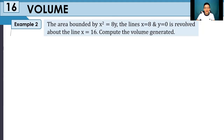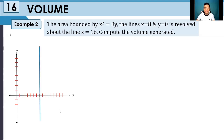Let us first graph our simple lines. Here we have our x and y axis. We have x is equivalent to 8 — that is our vertical line. For y is equivalent to 0, that is our x-axis. Next is our axis of revolution, which is x is equivalent to 16. So the area we will obtain will be revolved around x is equivalent to 16.